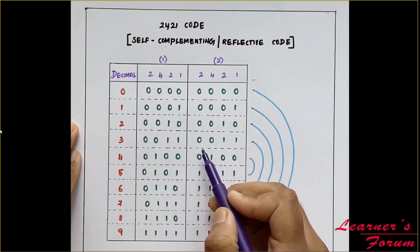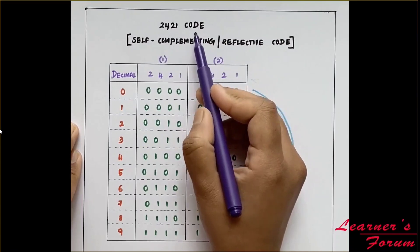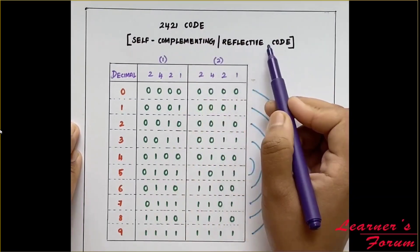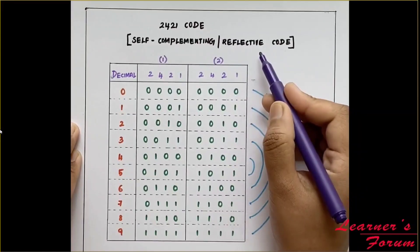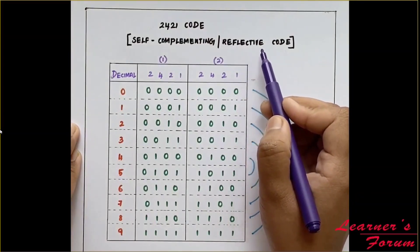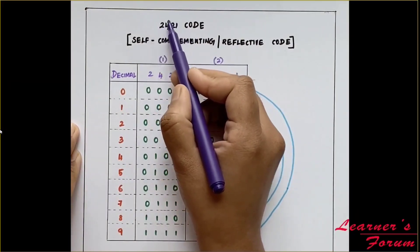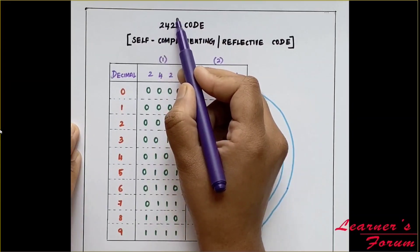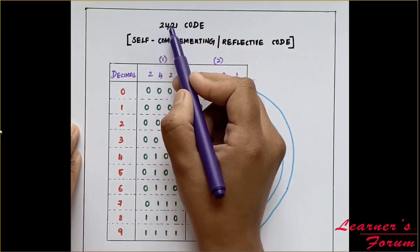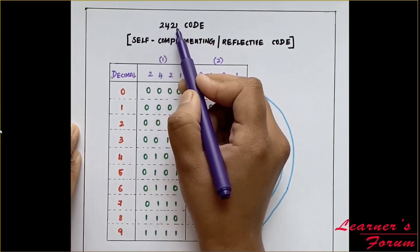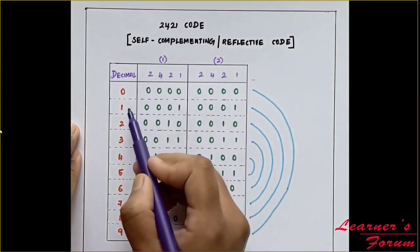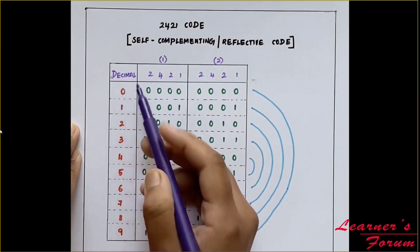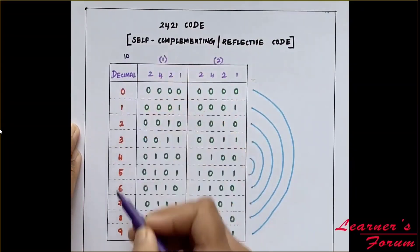Hello friends, welcome to Learner's Forum. The next topic is about 2421 code, which is called self-complementing or reflective code. Let us see the representation first and then we can justify why it is called self-complementing or reflective code. In 2421, the positional weights are 2, 4, 2, and 1 for this particular type of code.